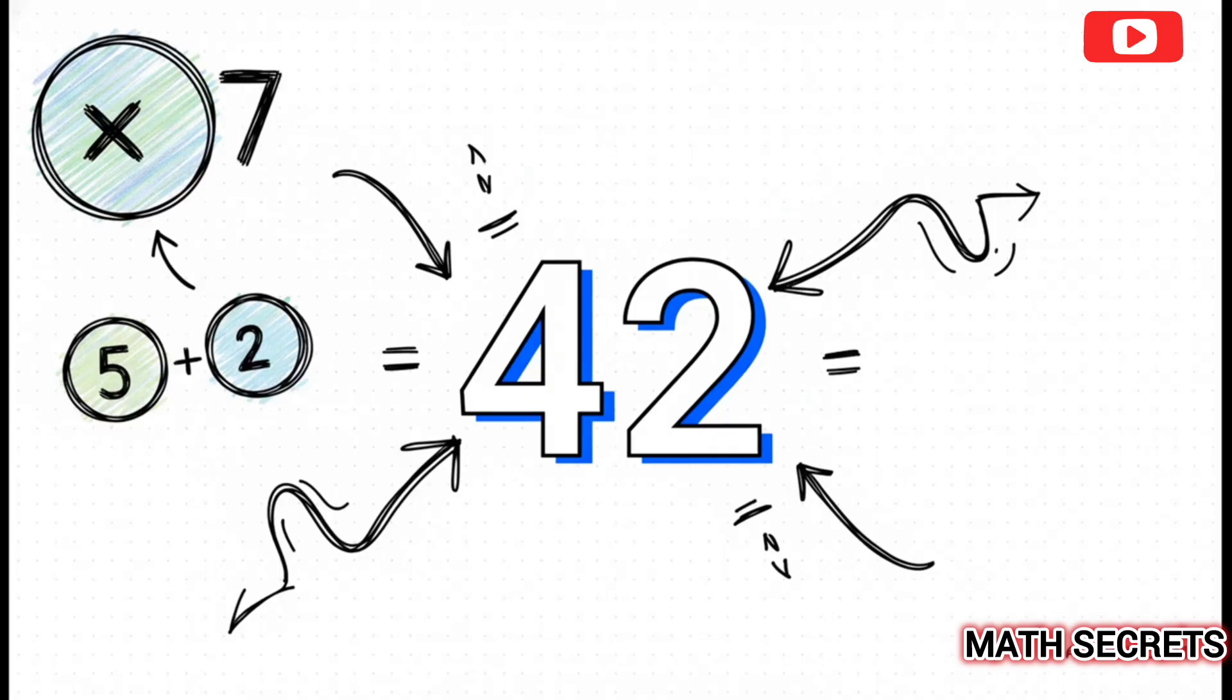And for the final step, we just add them together. 30 plus 12 is, of course, 42. And just like that, you've solved seven times six without ever having to actually multiply by seven. It's almost effortless.